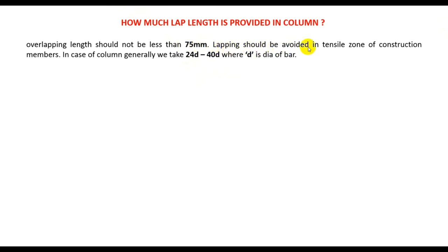Lapping should be avoided in the tension zone of a construction member — where you are using the lapping zone, it should not be placed in the tension zone of that concrete member. In the case of columns, generally we use 24d to 40d, where d is the diameter of the bar. So the minimum lapping length will be 24 times the bar diameter, up to 40 times the bar diameter.